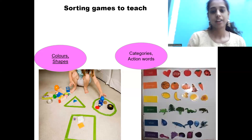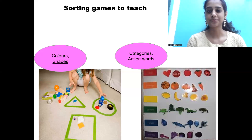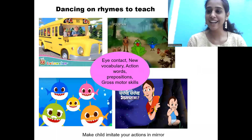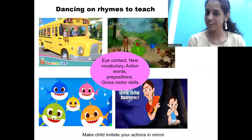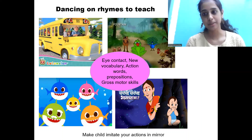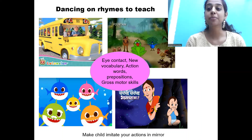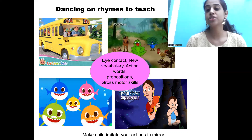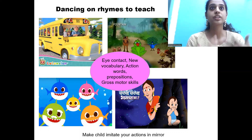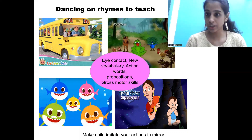The next activity is dancing on rhymes, where you can use rhymes to imitate actions. This helps improve joint attention and encourages the child to follow along.